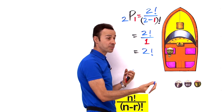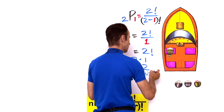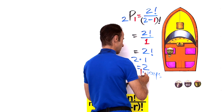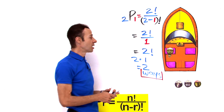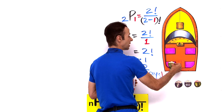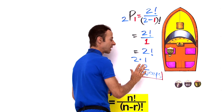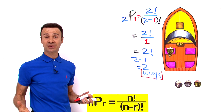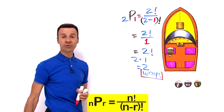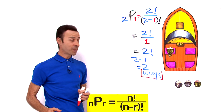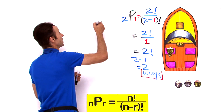2 factorial expands to 2 times 1 which equals 2. There are 2 ways for that girl to sit on the port side — she could sit in one seat or the other. Now that we have worked that out, if she takes up one seat, there are 3 seats left and 3 passengers remaining.